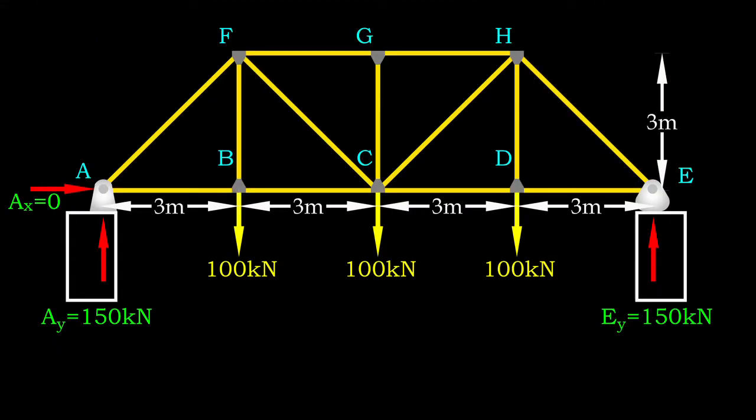After determining support reactions, it is time for us to calculate the member forces. Before we proceed, let's determine the inclination of diagonal members. After some calculation, we know the diagonal members are slanting at 45 degrees.